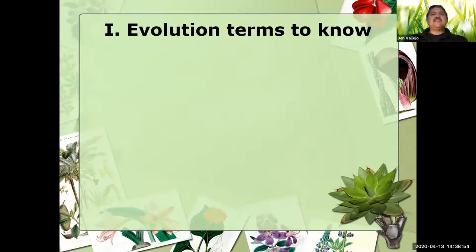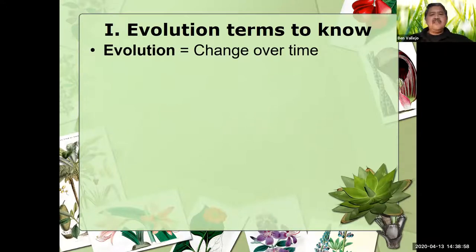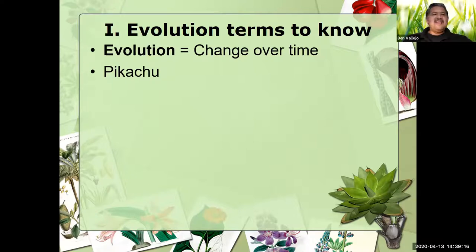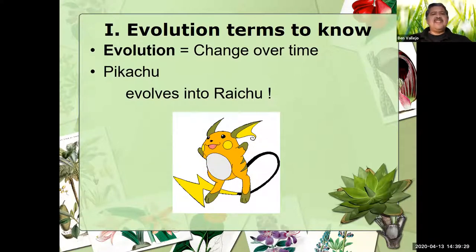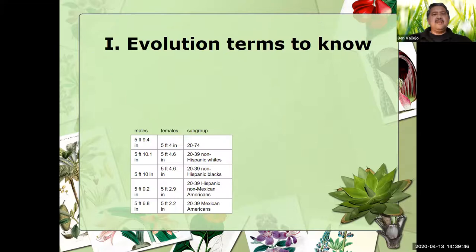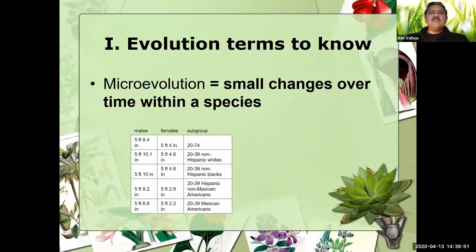Here are some evolution terms. The first one is evolution itself — evolution means change over time. If you're still playing Pokemon Go, or collected the cards back in the 2000s, you know that even Pikachu evolves into Raichu. That's a silly example of change over time. But evolution doesn't mean that a man came from a monkey necessarily. Evolution is any change over time. There are small changes that occur over time within a species — no one argues with this idea, which is called microevolution.